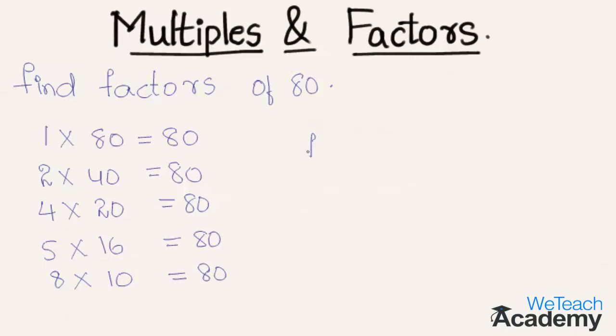So here we can see the factors of 80 are 1, 2, 4, 5, 8, and then 10, 16, 20, 40, and 80.